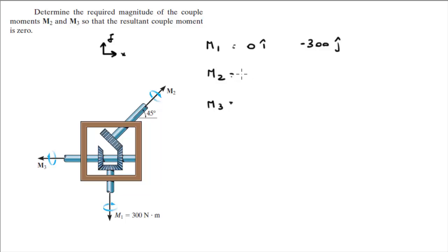M2 is given by the magnitude of M2 times the cosine of 45 in the i plus M2 times sine of 45 in the j, because M2 has a magnitude that goes that way and a magnitude that goes that way.